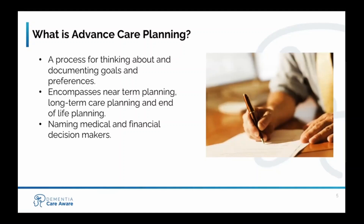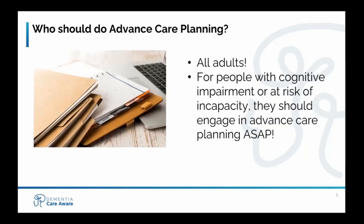Advanced care planning is the process that supports adults at any age or stage of health in understanding, documenting, and sharing their goals and preferences for near-term planning, long-term planning, and end-of-life planning. Advanced care planning refers to the process of naming medical and financial decision makers and completing the necessary legal documents. So who should do advanced care planning? The simple answer: all adults, regardless of age, should do advanced care planning.